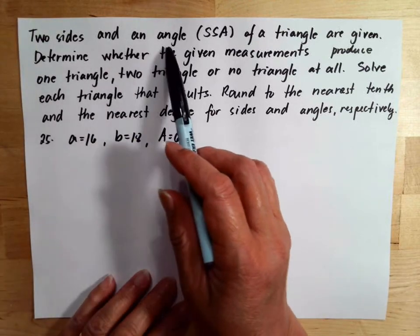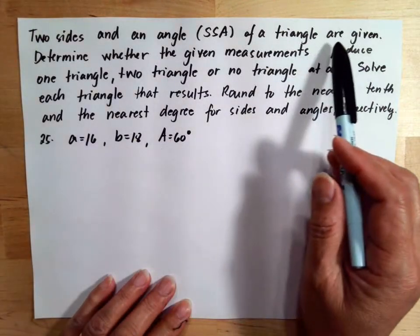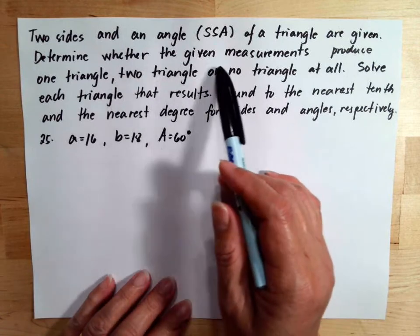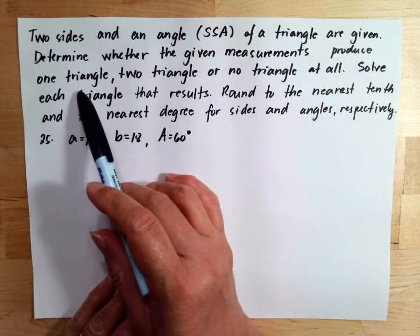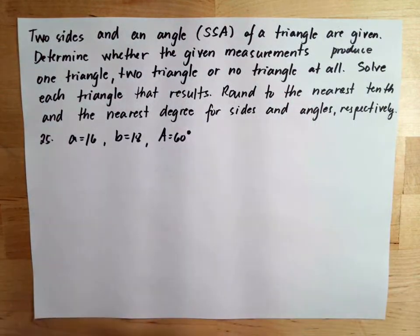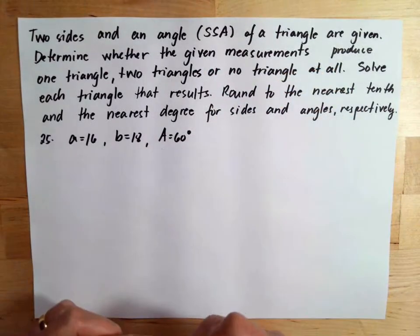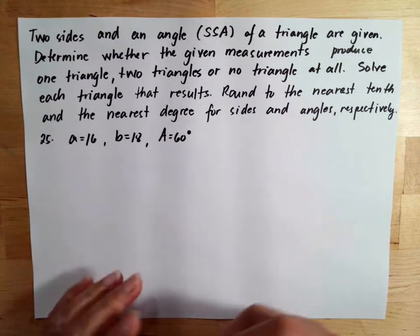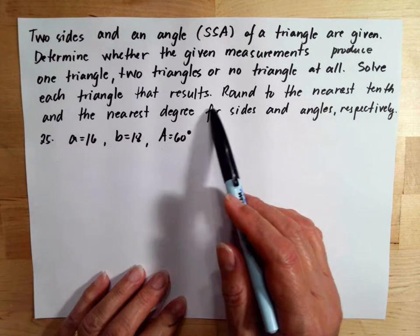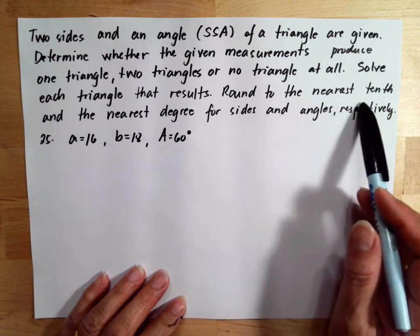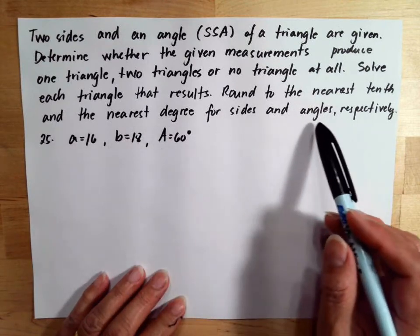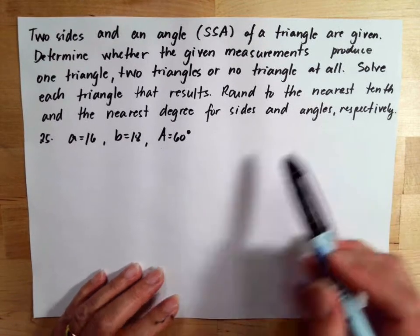Two sides and an angle of a triangle are given. Determine whether the given measurements produce one triangle, two triangles, or no triangle at all. Solve each triangle that results. Round to the nearest tenth and the nearest degree for sides and angles respectively.